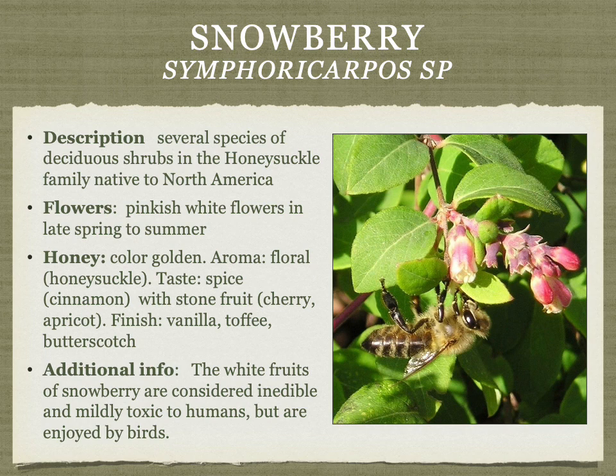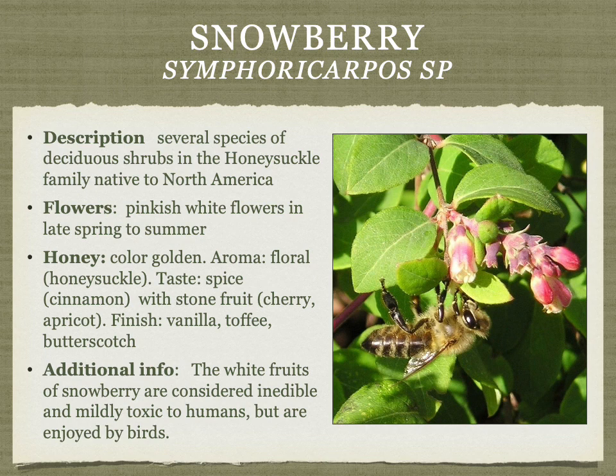Snowberry comes from shrubs in the honeysuckle family. The honey is golden in color with a floral honeysuckle-like aroma, spice, stone fruit, vanilla, toffee, and butterscotch. The white fruits are enjoyed by birds but are mildly toxic to humans. Snowberry grows nearby but the bees don't seem to produce honey from it locally — perhaps due to wrong species or competing floral sources — though it would be wonderful to be able to produce this variety.